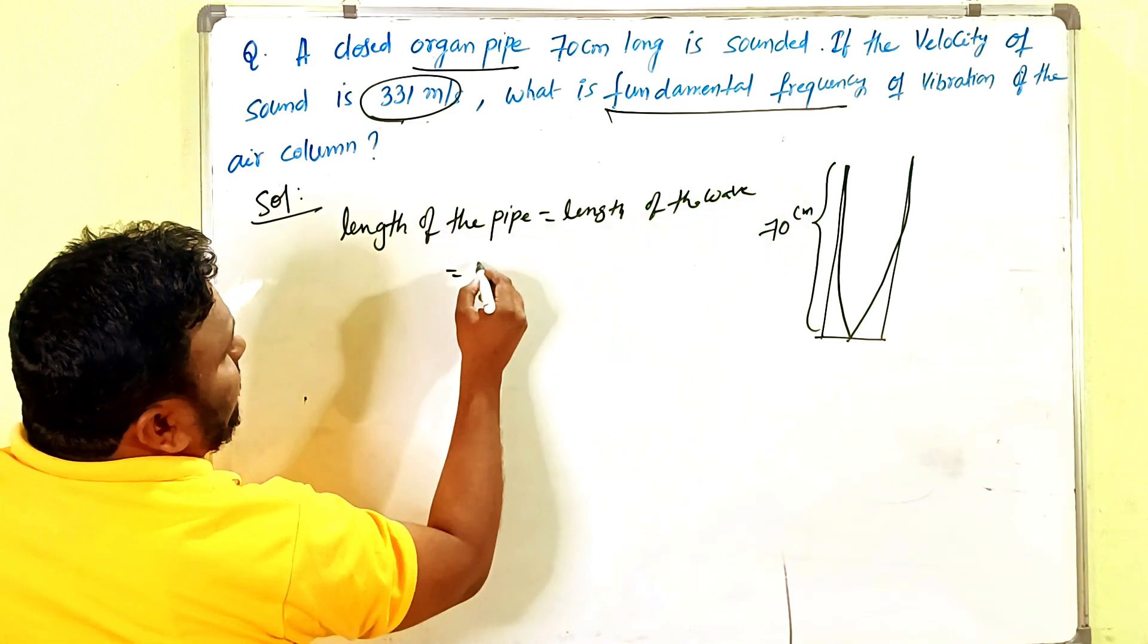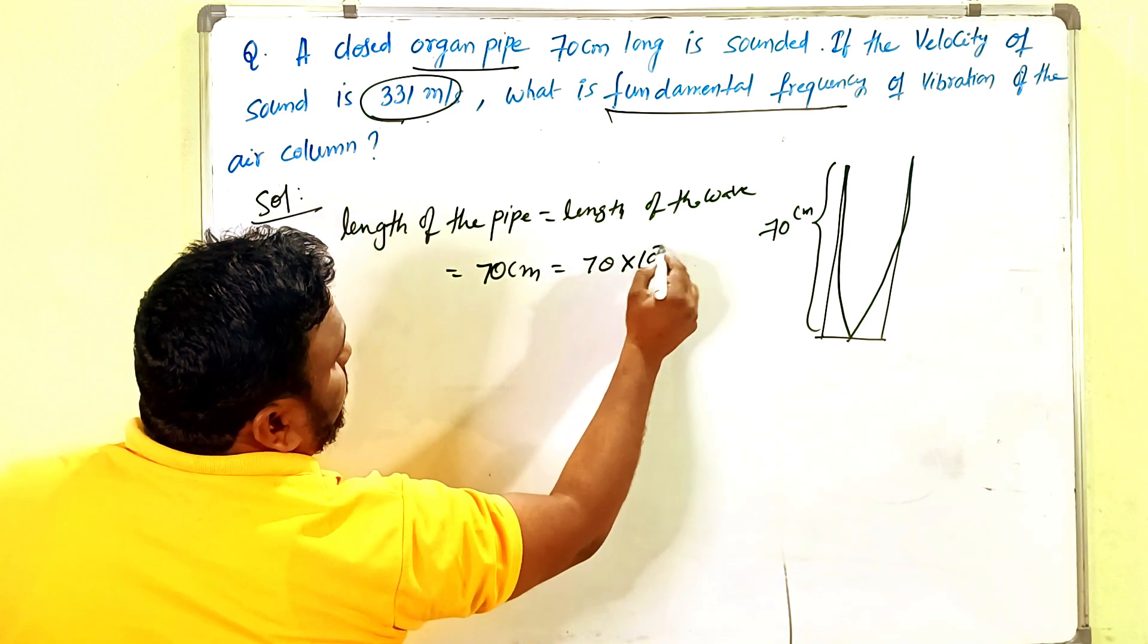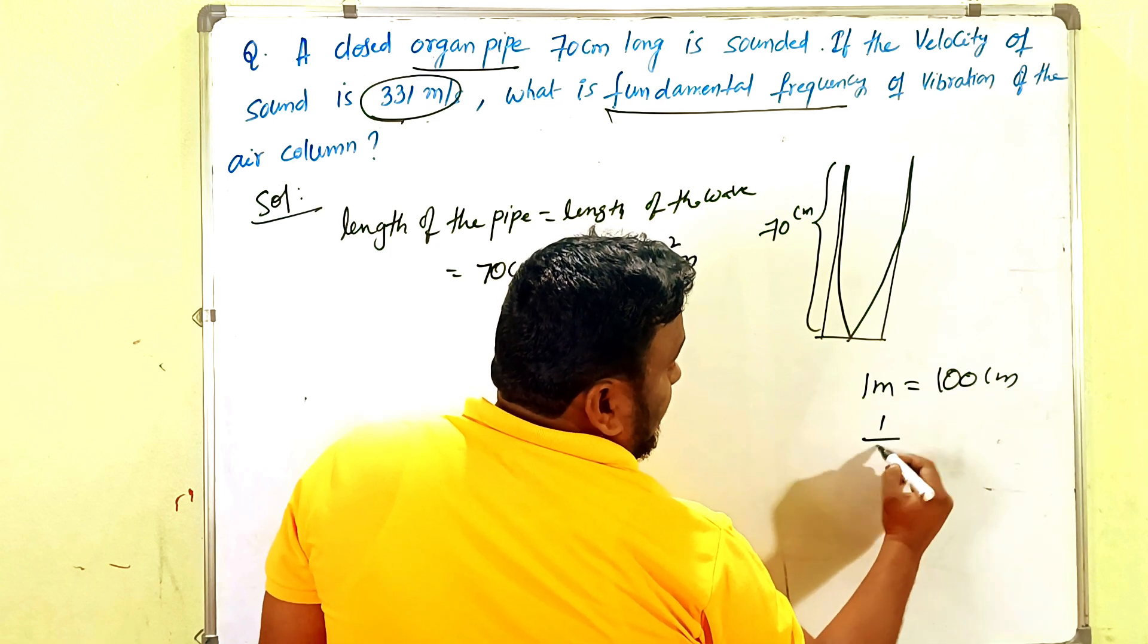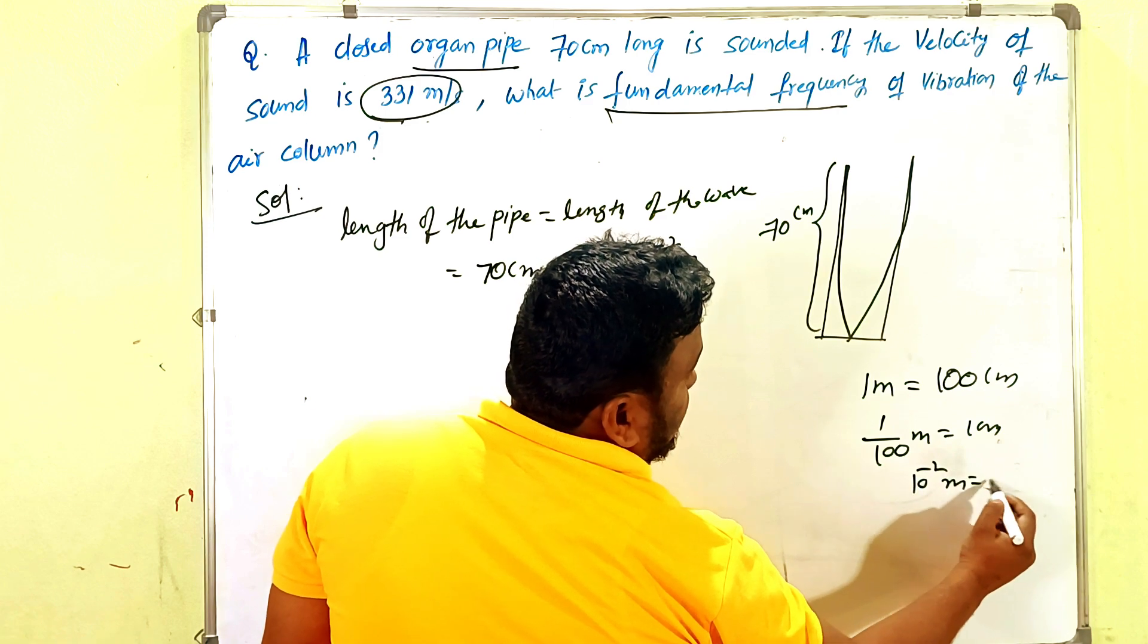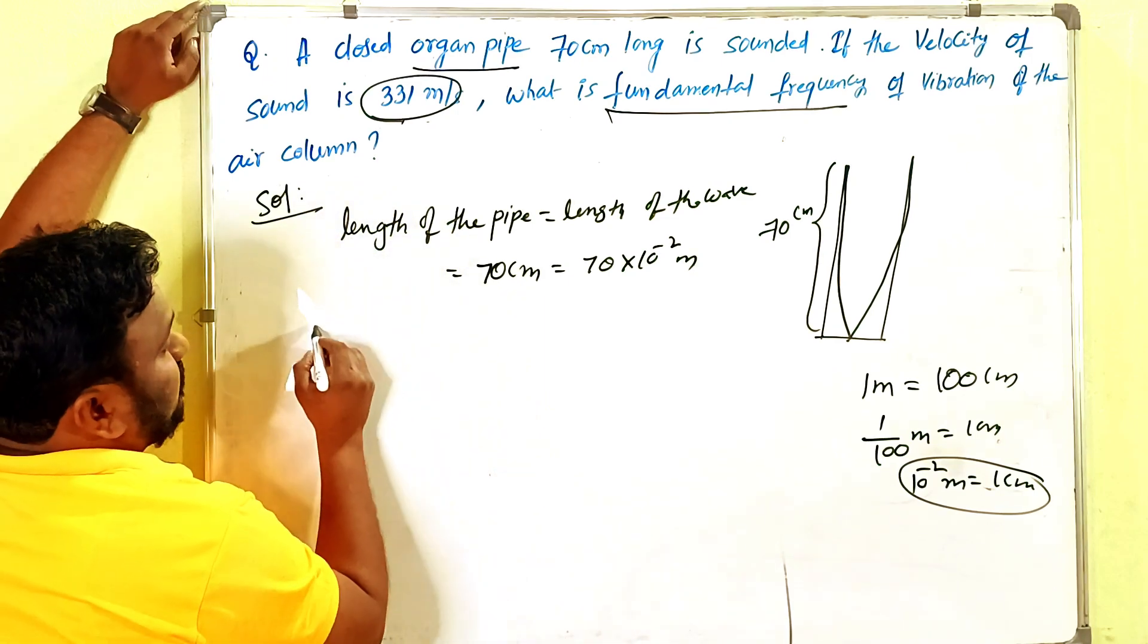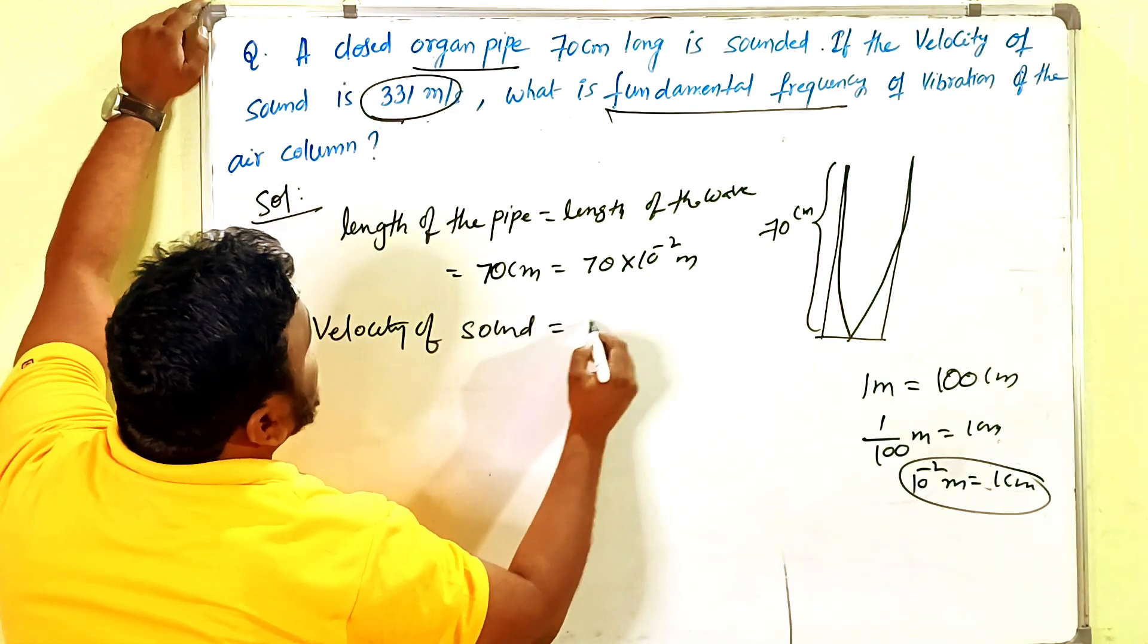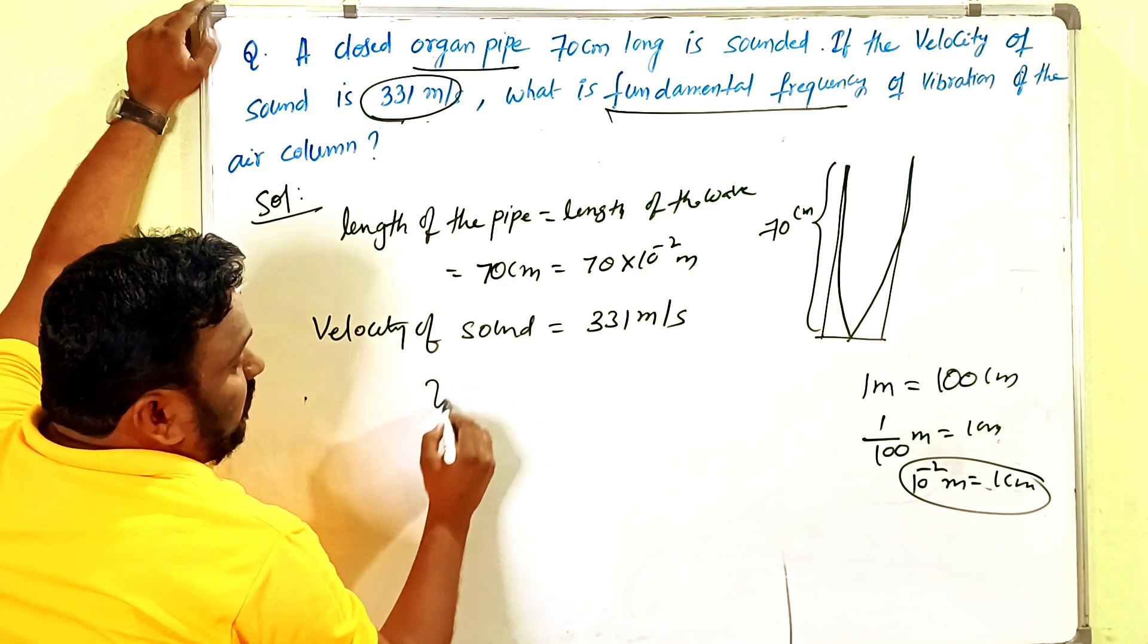How can we write this? One meter equals 100 centimeters, so 1/100 meter equals 1 centimeter. That means 10^-2 meters equals 1 centimeter. In that way we can convert. What was given? Velocity of sound is 331 meters per second. Now what you have to find out? Fundamental frequency—that's the question.